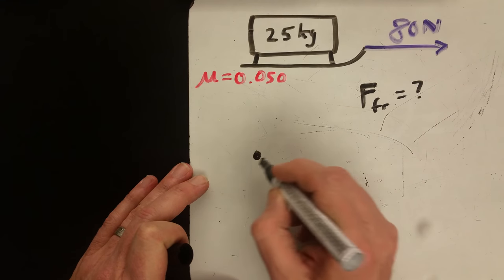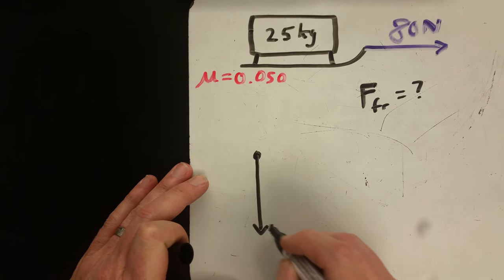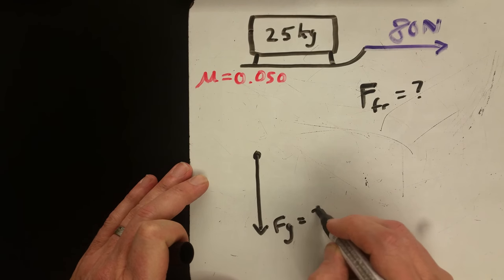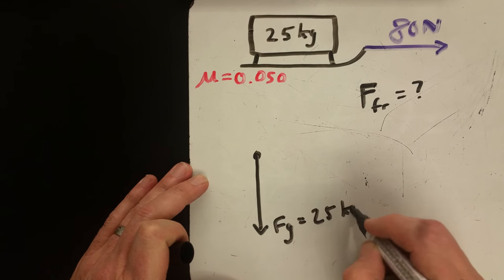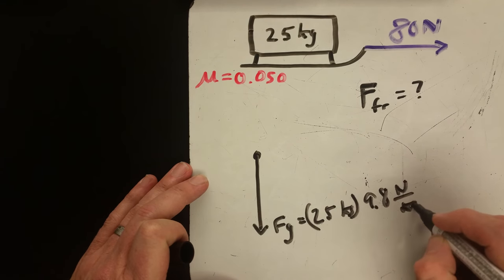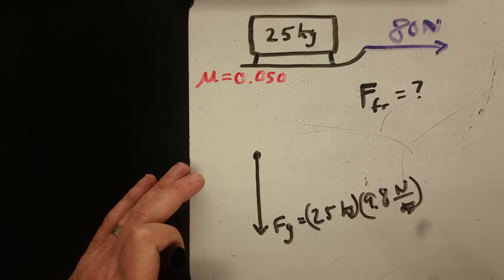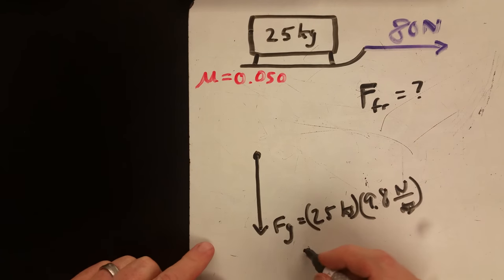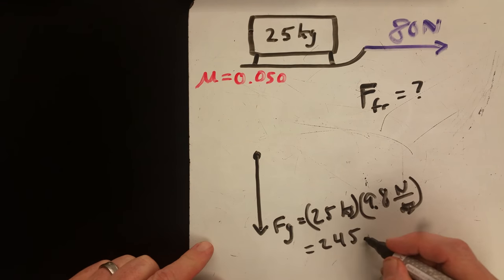We start with a force diagram, and we know we've got gravity down here, and that's 25 kilograms times our 9.8 newtons per kilogram, or 245 newtons.